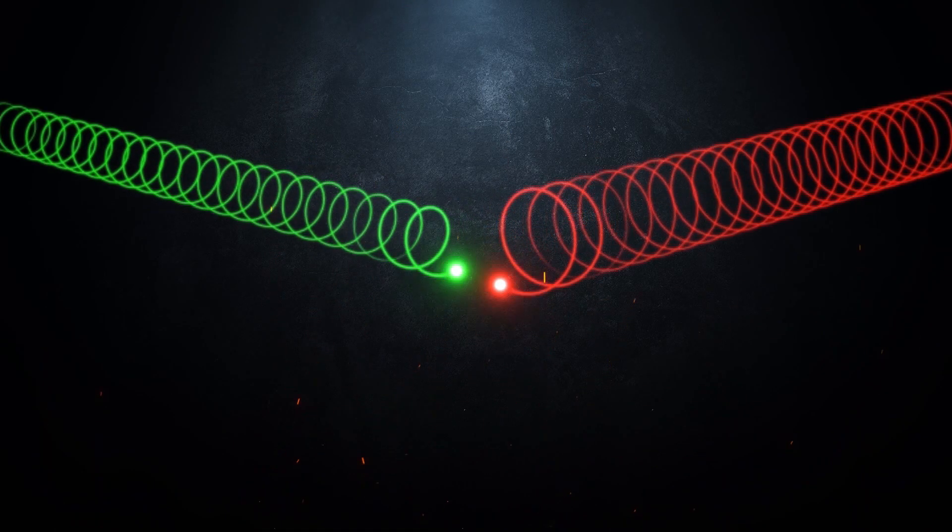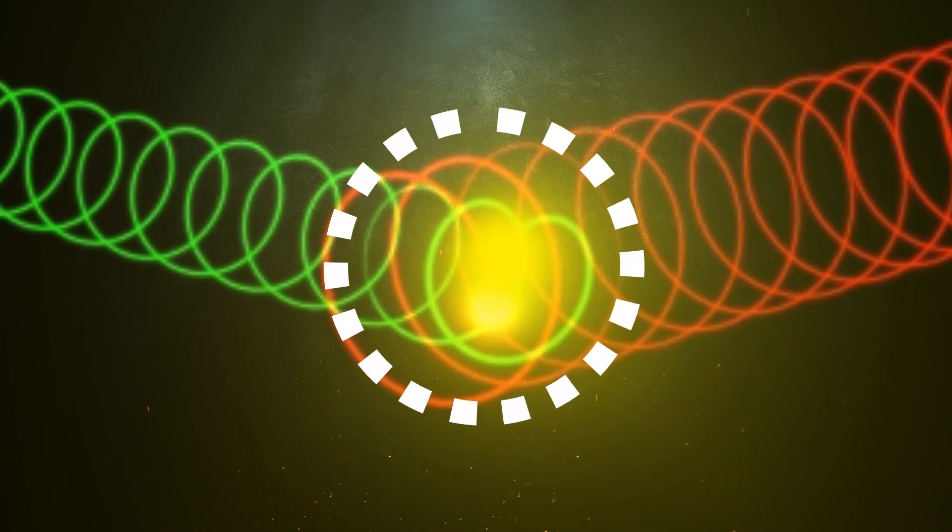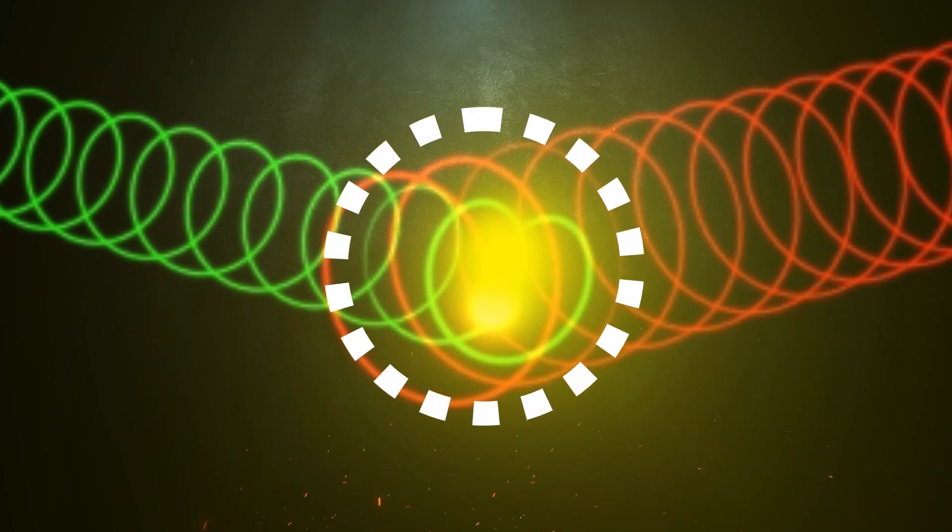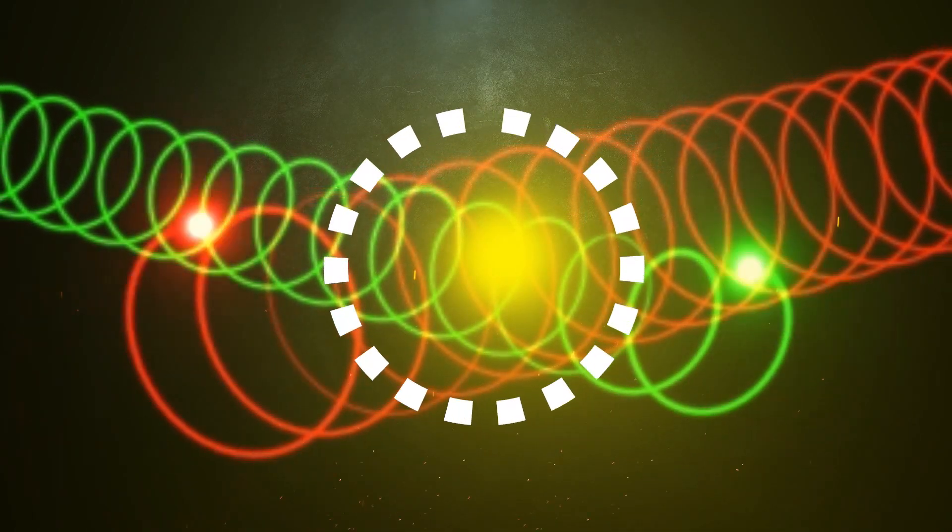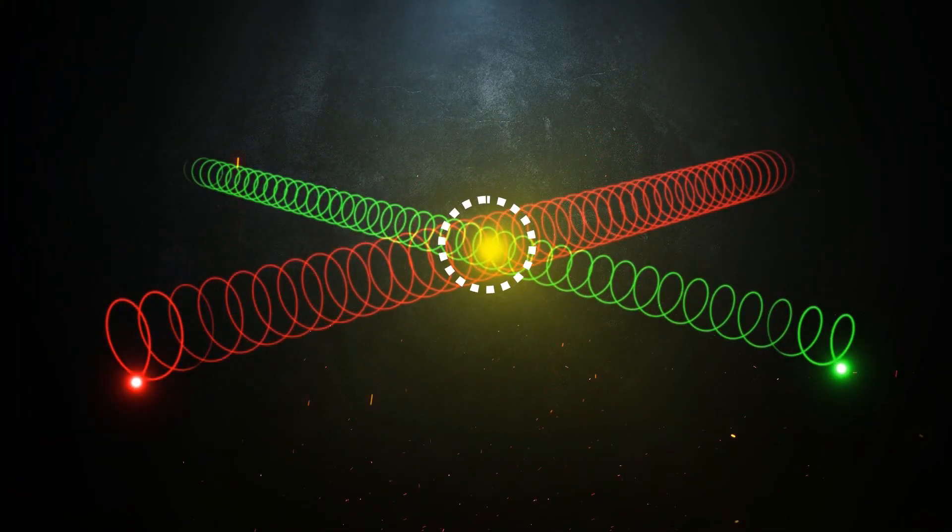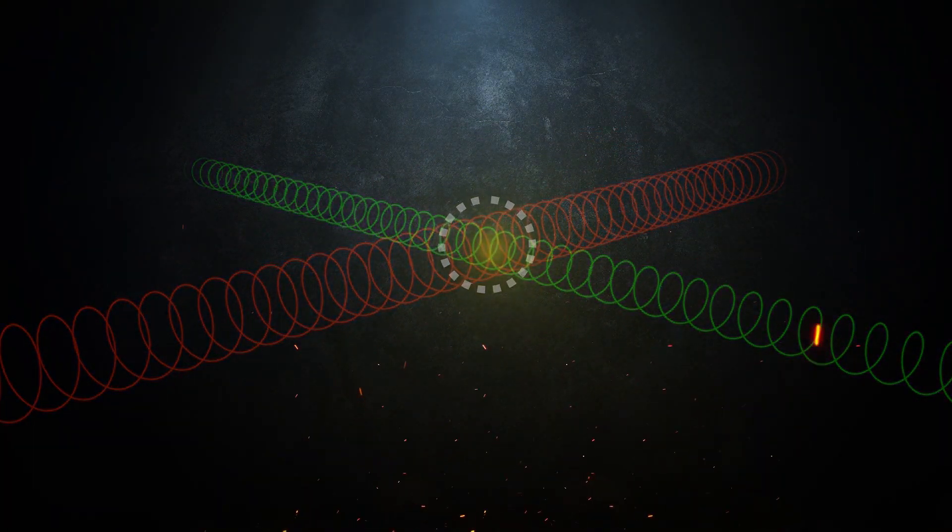So, at the intersection point, it is seen yellow, and then, after moving away from the intersection point, the photons of each light will detect separately, and we see them with their primary color, red and green.